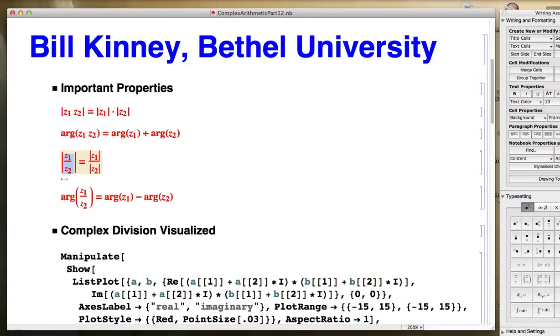For a quotient, the modulus of a quotient is the quotient or ratio of the corresponding moduli, and the argument of a quotient is the difference of the corresponding arguments.